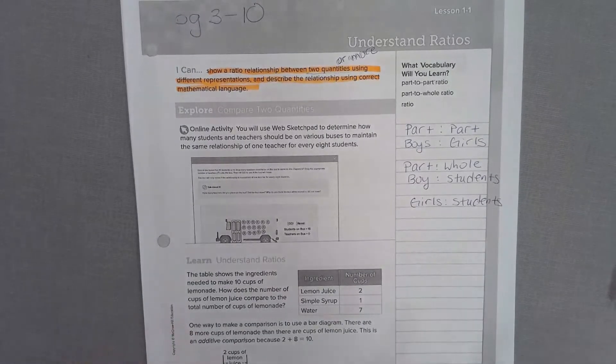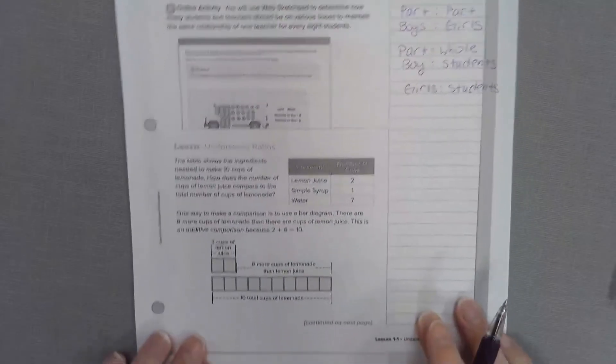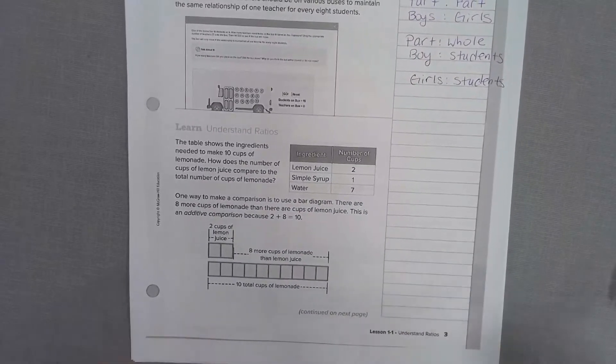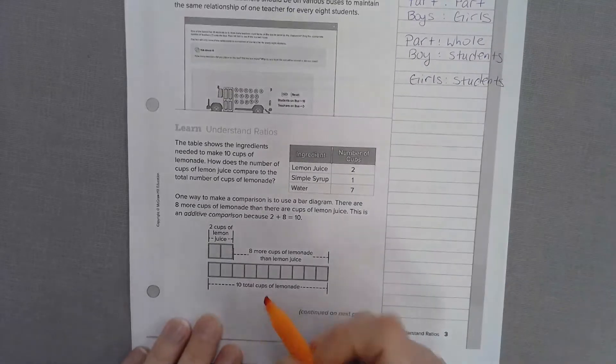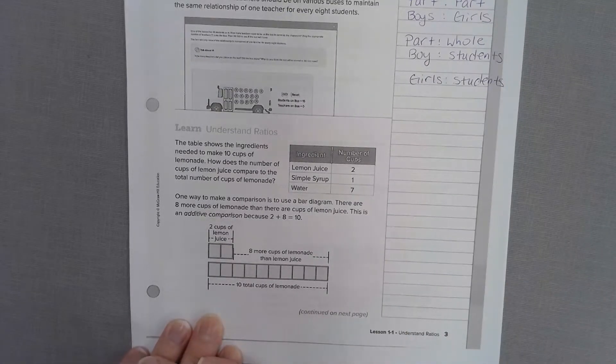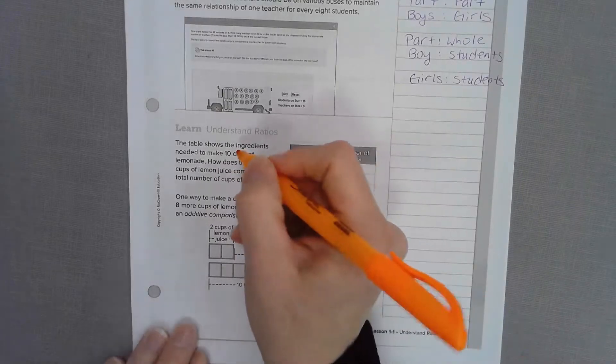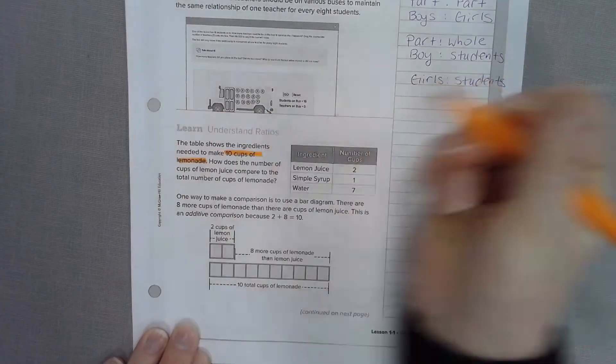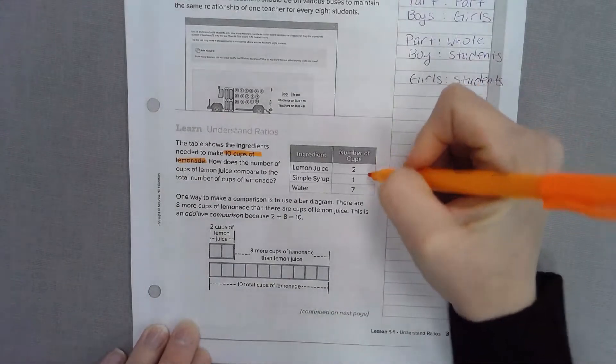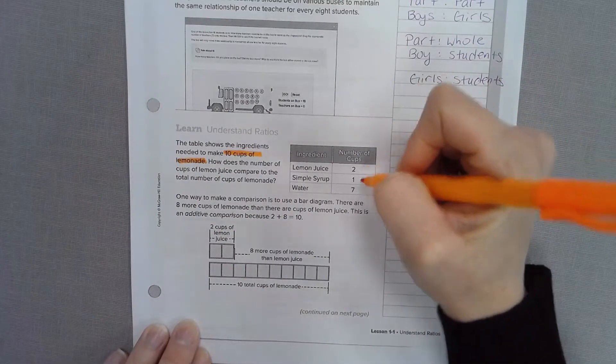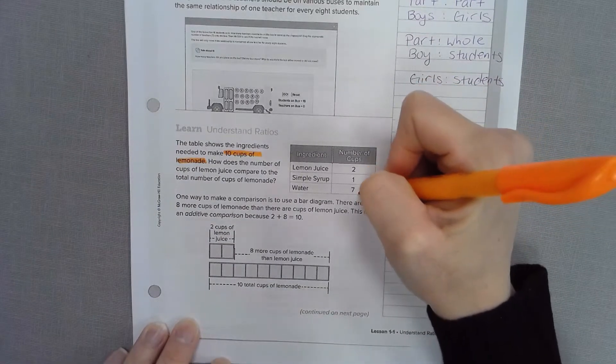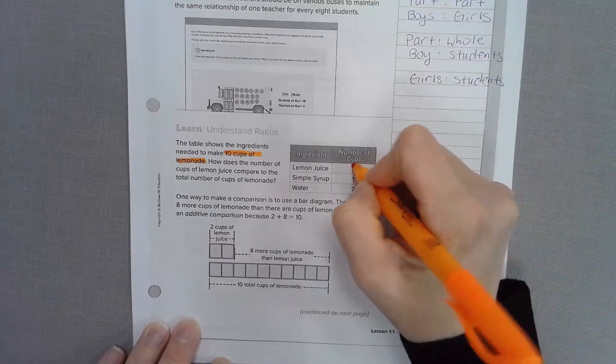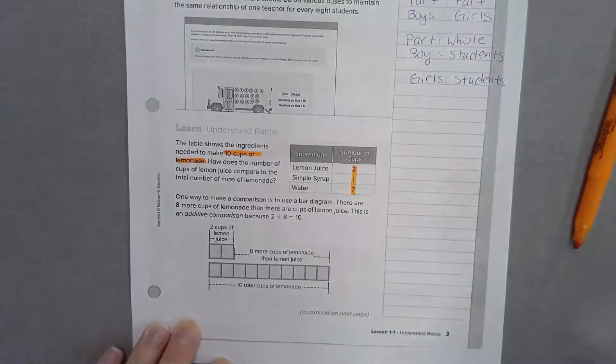Let's take a look down below. Understanding ratios. The table shows the ingredients needed to make 10 cups of lemonade. Let's highlight that. We're going to come over here. Do you see how it says 2 cups of lemon juice, 1 cup of simple syrup, and 7 cups of water?